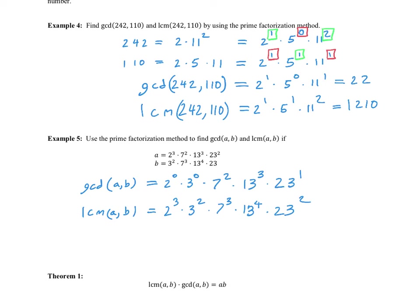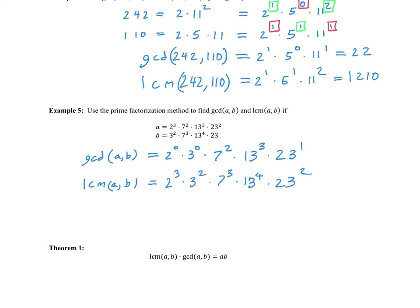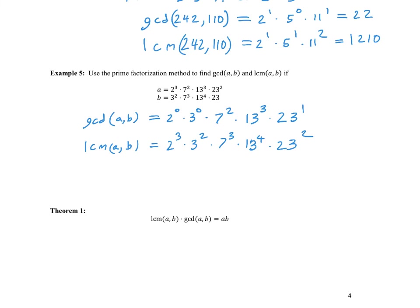We won't worry about calculating those large numbers. But notice something neat: if we multiply GCD and LCM together, we add the lowest and highest powers for each prime, giving us 2³, 3², 7⁵, 13⁷, and 23³ — which is exactly the same as multiplying A and B together.